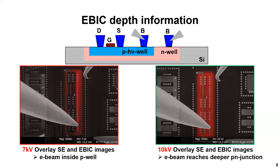The reason is the different interaction volume of both used accelerating voltages. At 7 kV, the primary electrons can only reach the middle of the P-well, so the EBIC signal comes from the contact doping and from the side wall of the P-well only. By increasing the accelerating voltage, the electrons can reach the bottom of the P-well. Now the EBIC signal is coming from the side wall and the bottom of the P-well, and therefore we see more or less the entire area of the P-well. Therefore, it's important to align the beam in the correct way.